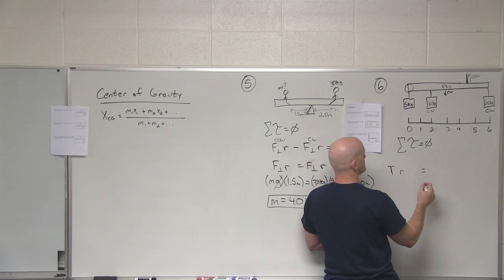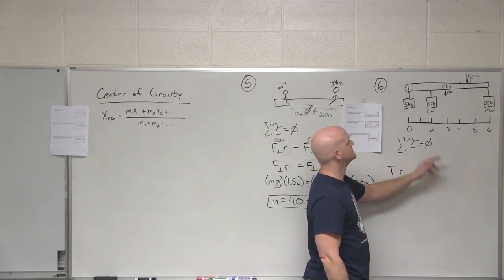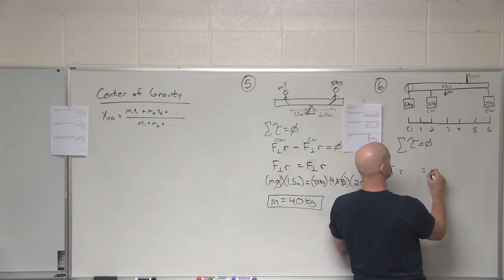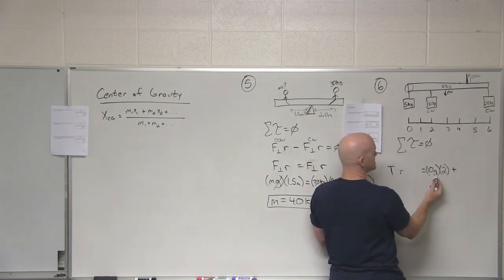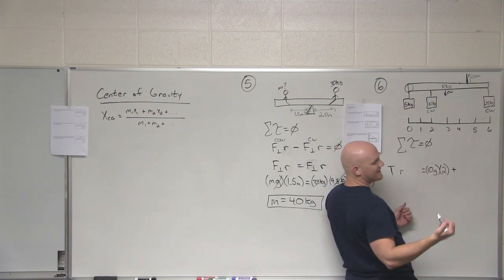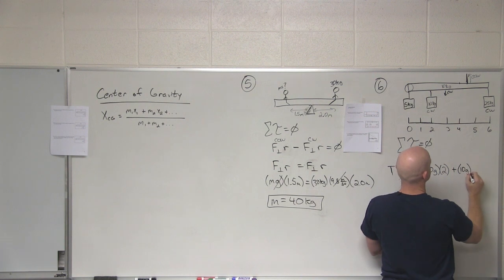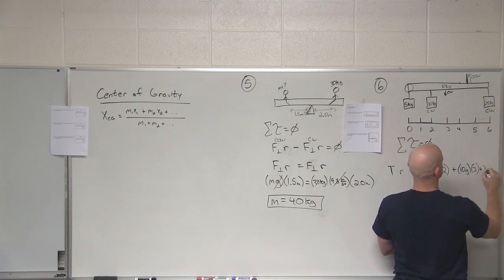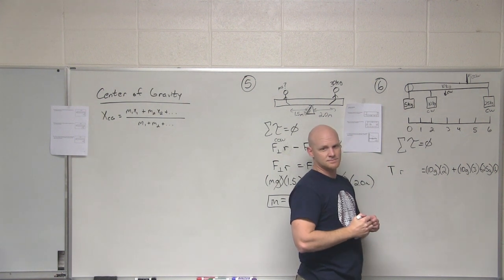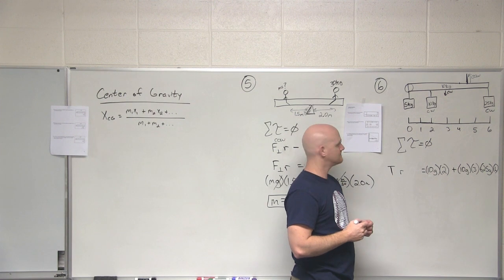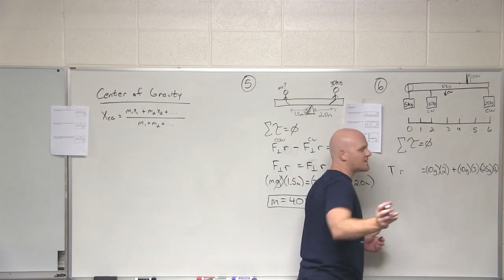The tension force at distance r is on the counterclockwise side. On the clockwise side I have three torque components: 10g times 2 for the first mass, 10g times 3 for the board's center of mass, and 25g times 6 for the 25-kilogram mass. I have two unknowns — tension and r — so I need a second equation.